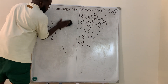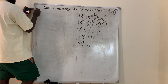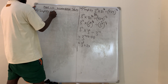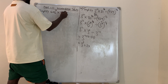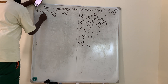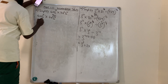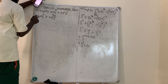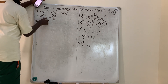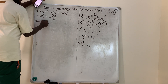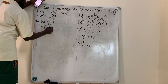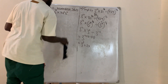Question number 15: simplify 4ab³ × 7a²b⁴. Multiply the coefficients: 4 × 7 = 28. For a: a¹ × a² = a³. For b: b³ × b⁴ = b⁷. The answer is 28a³b⁷.